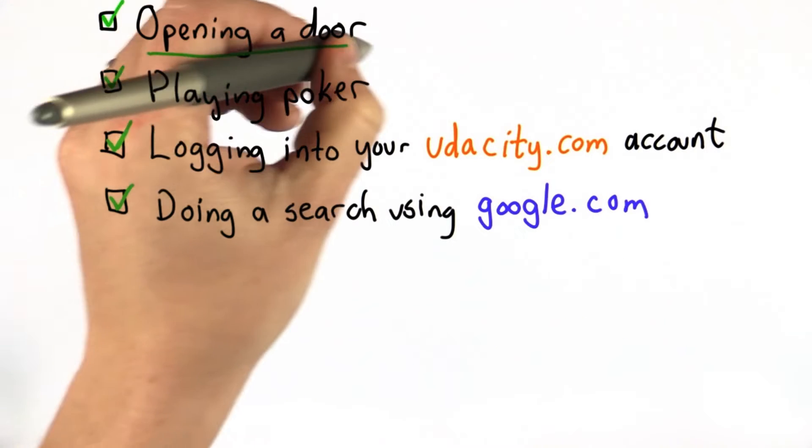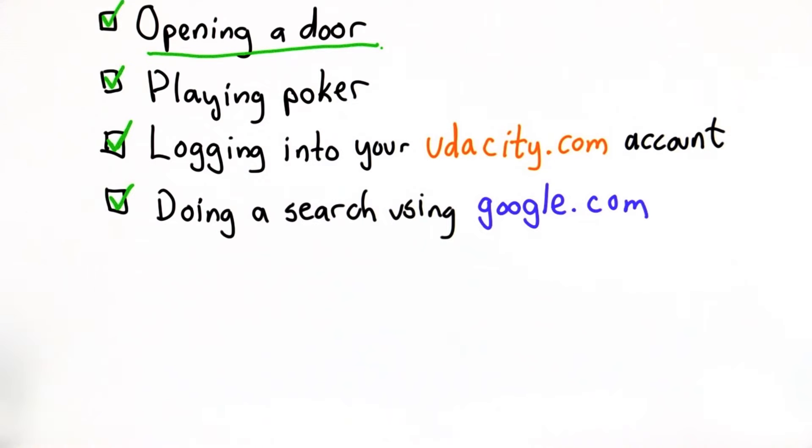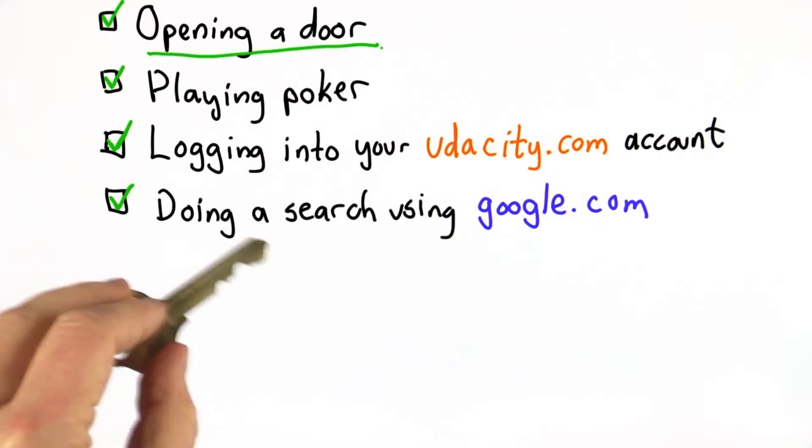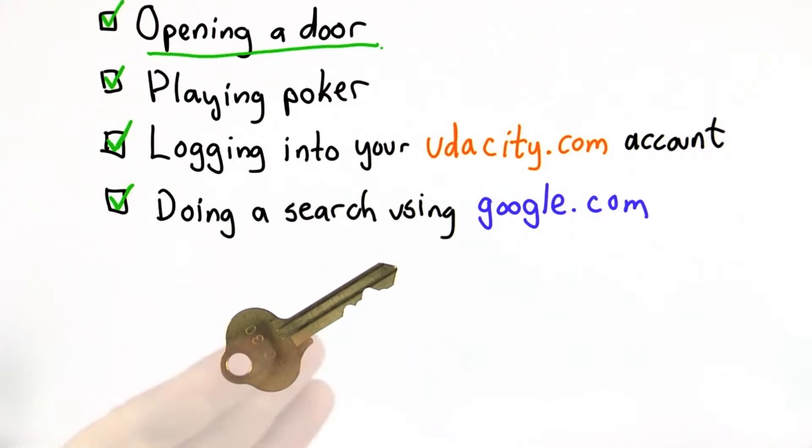The first is opening a door with a mechanical key. What's the secret there? Well, let's look at a key. The secret is actually the shape of the key. Now that I've shown you this key, there's no secret anymore.